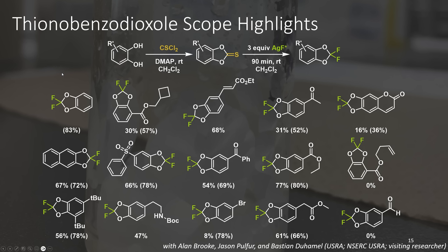We were able to demonstrate that this chemistry works for a wide range of different difluorobenzodioxols, which were prepared from the corresponding catechols using thiophosgene as an intermediate. This also tolerated a wide range of functional groups such as the cyclobutane, the cinnamate, electron-deficient, as well as electron-rich aromatics. Overall, this demonstrated itself to be a fairly good method for synthesizing difluorobenzodioxols.